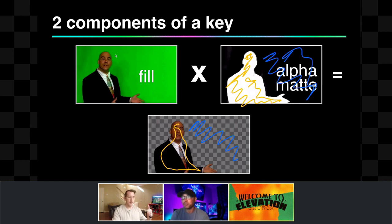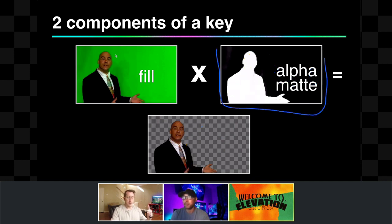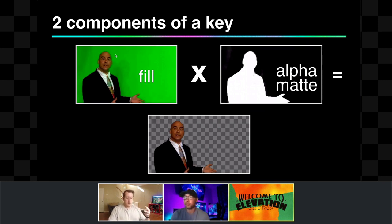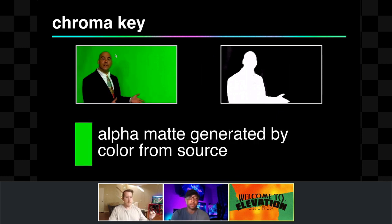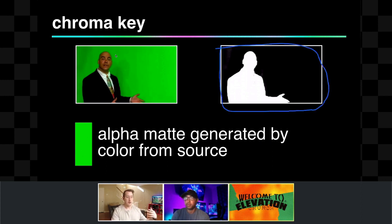Every key is going to have a fill and an alpha mat. There are a couple of methods to get the alpha mat. The first is a chroma key, which generates the alpha mat based on a color in the image. The green screen is a great example — a chroma key takes out anything that's a specific color. Green is used often because it's an uncommon color. It generates the alpha mat based on what in the image is green — make that fully transparent; what is not green — make that fully opaque.